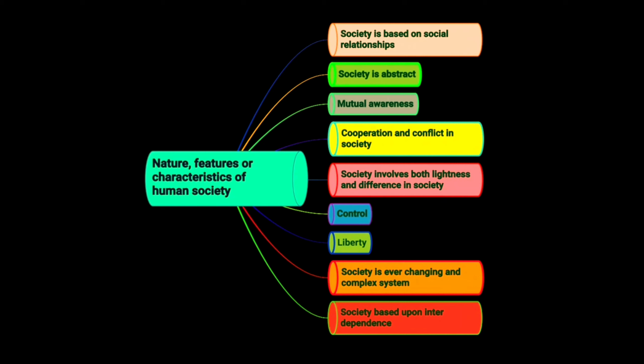Dear Students, let us look at the nature, features, or characteristics of a human society. Society is based on social relationships, and society is abstract.